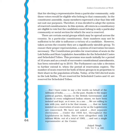There are certain social groups which may be spread across the country, and in a particular constituency their numbers may not be sufficient to influence the victory of a candidate. Aisi bahut si social groups hain jo poori country mein spread hain, aur kisi particular constituency mein wo numbers mein itne nahi hote ki kisi candidate ki victory ko influence kar sakein. However, taken across the country, they are a significant, sizable group. So to ensure their proper representation, a system of reservation becomes necessary.